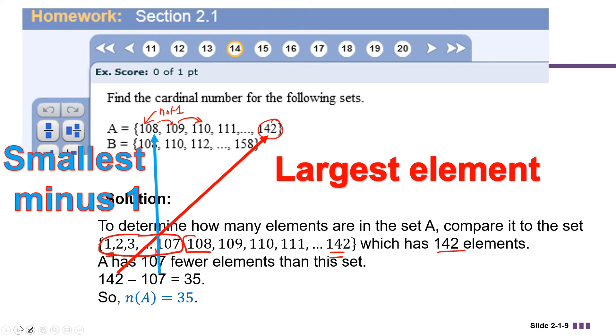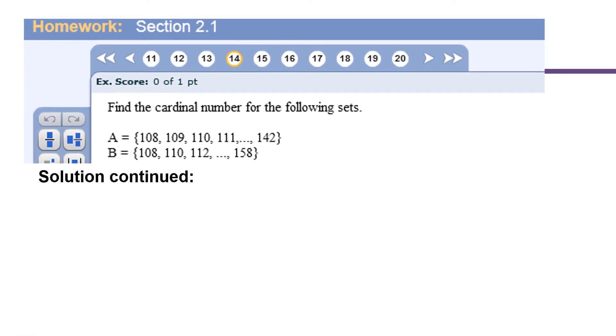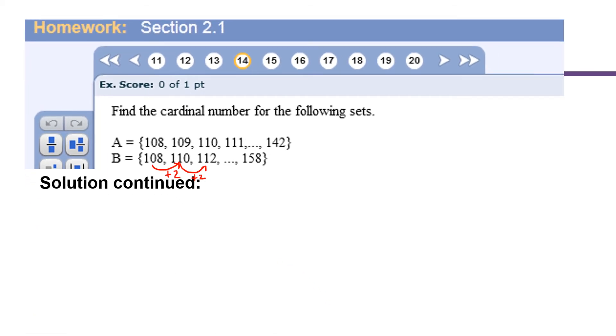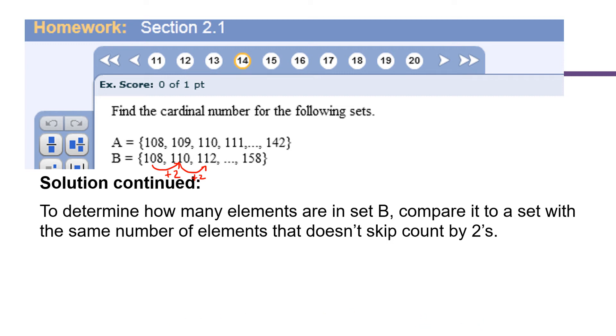Now let's look at what we can do when a set increases by more than one each time. So set B, we have a set that increases by two. 108 plus two is 110, 110 plus two is 112, and so on. And it goes all the way up to 158. We would like to use the same techniques that we did for set A, but unfortunately this one doesn't increase by only one each time. But we can fix that. What we're going to do to determine how many elements are in set B is to compare it to a set that has the same number of elements, but doesn't skip count by twos.